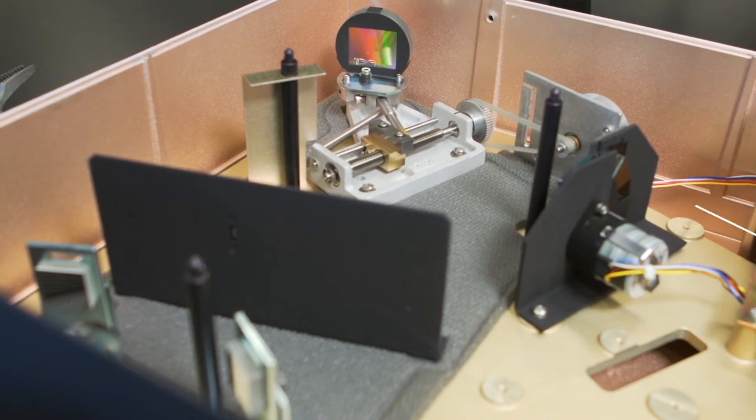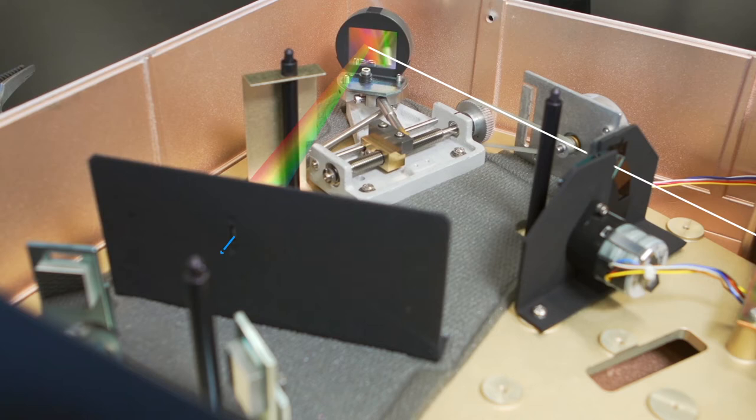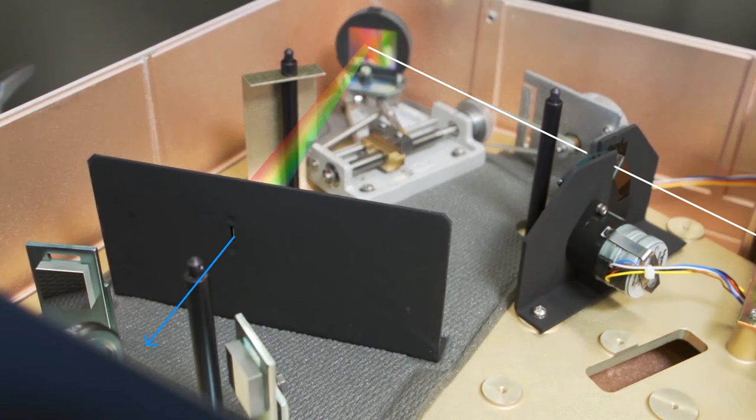The light travels towards the grating and strikes it, causing the light to be dispersed into a spectrum of colors. The grating is where a specific wavelength is focused onto the exit slit, thus selecting for a particular wavelength.